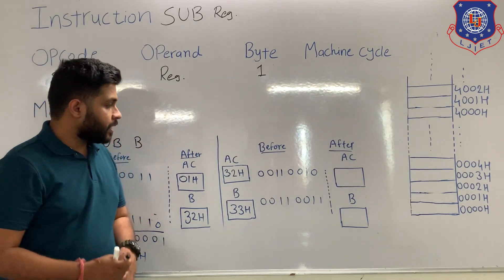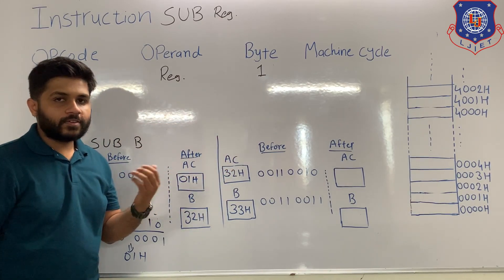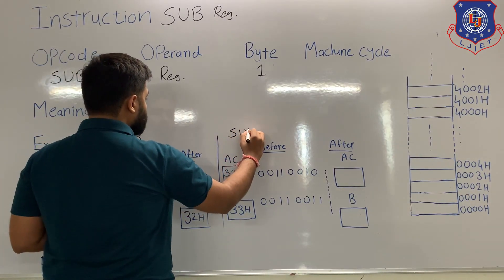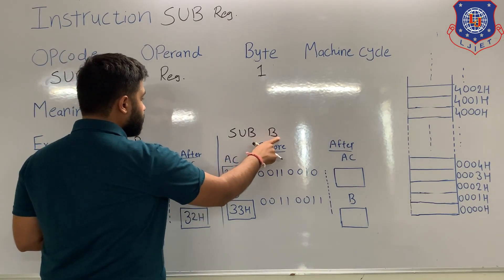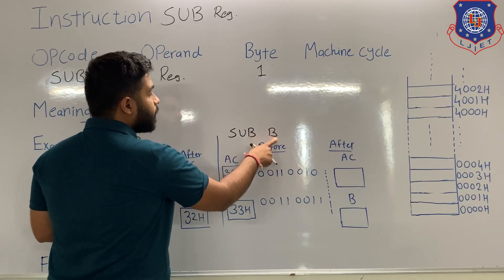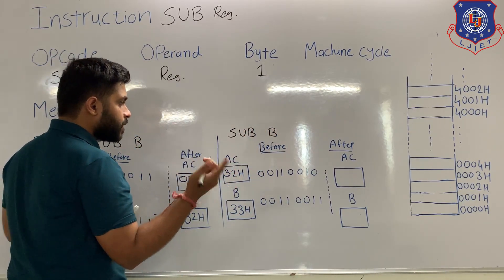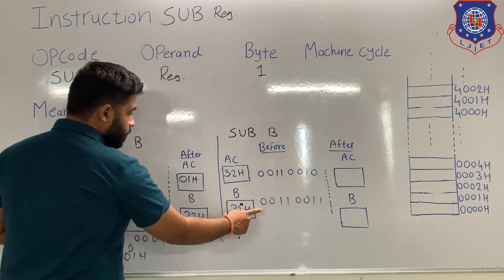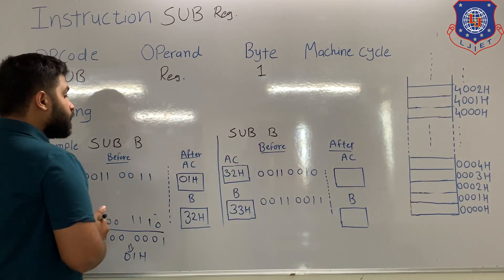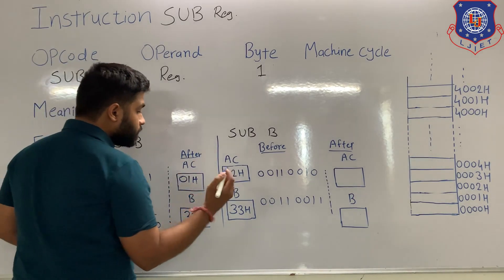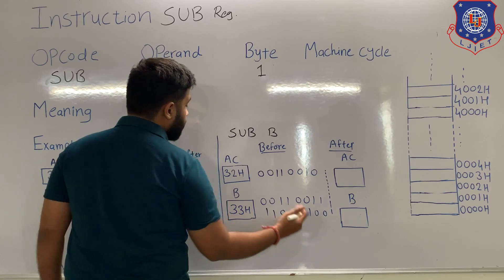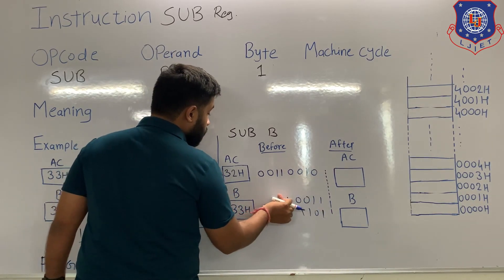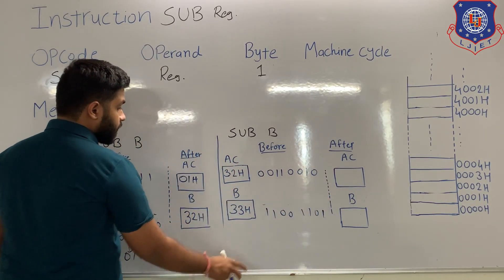Now let's see Case 2, where the content of the accumulator is smaller than the content of B. We take the same example: SUB B. The content of B, 32H, is represented in binary as 00110010. Converting to 1's complement gives 11001101. Adding 1 for the 2's complement gives 11001110. The 2's complement of register B is the same as before.